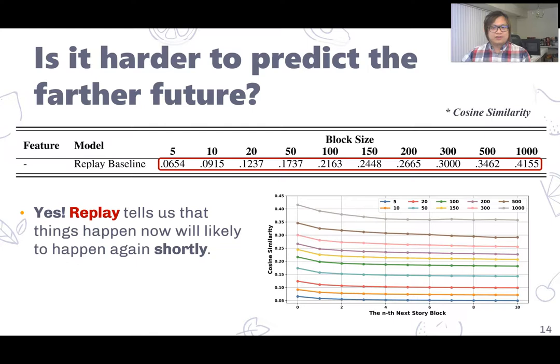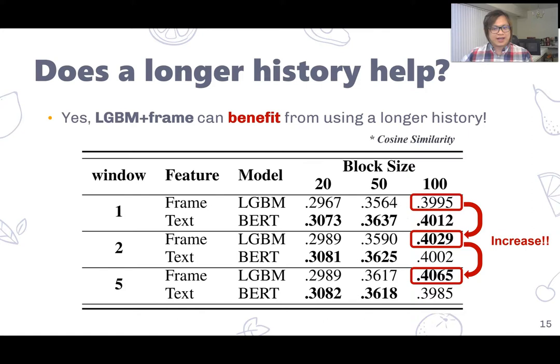Would it be harder if we want to predict the farther future? Replay baseline tells us that the answer is yes, because things happening right now will be likely to happen again shortly, but they will be less likely to happen in the farther future. Does a longer history help? In this experiment, we tried using one, two, and five previous story blocks. It turns out that the answer is yes: LGBM can benefit from using more information from previous story blocks. However, BERT cannot take advantage of it, and the performance even got hurt.